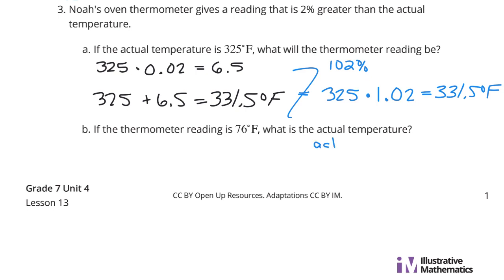We took the actual temperature, the 325 above there. We multiplied it by the 102%, and we found what it measured. That's what we did up there in blue. Can we use that to help us in B? We're looking still for the actual. We're going to multiply that actual by 102%, and that's going to equal our measured. Now, it's measured at 76 degrees.